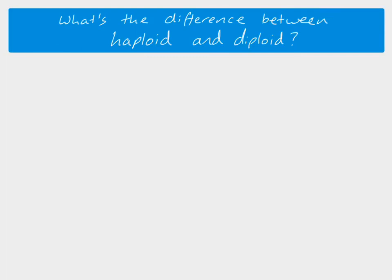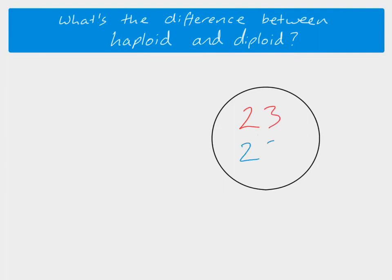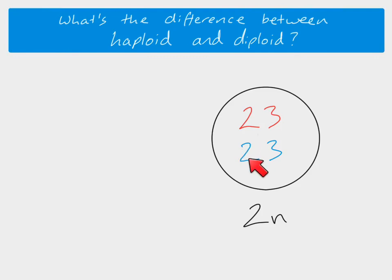First of all we need to be clear about the difference between the terms haploid and diploid. Human body cells have 46 chromosomes inside them, and those 46 chromosomes are in pairs — 23 came from your mum and 23 came from your dad. When you have a cell or a nucleus which has pairs of chromosomes — two sets — we say it's diploid, and we give it the term 2N, where N represents a single set.